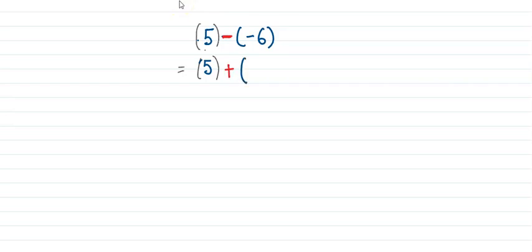In place of the subtraction sign I will put an addition sign and add the opposite. What is the opposite of negative 6? It is positive 6. So now we have both positive numbers being added, so it will be 11. We can write positive 11 or simply 11 — it is the same thing.